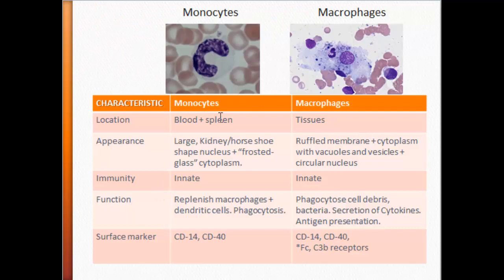The monocyte's function was to replenish macrophages and dendritic cells, as well as phagocytosis. The macrophage phagocytoses cell debris and bacteria, it also secretes cytokines — we'll look at that later when we discuss the macrophage response in inflammation — and it also presents antigen, which we'll look at in more detail later on.